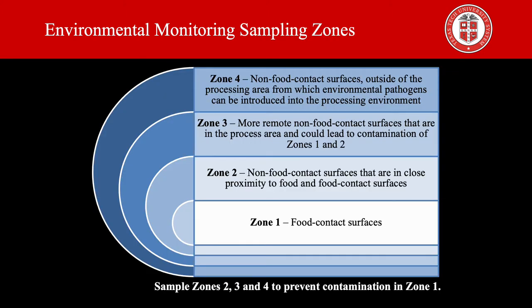Environmental monitoring can be divided into four different sampling zones. Zone 1 involves food contact surfaces — for example, conveyors, buckets, utensils, and plowing hands.